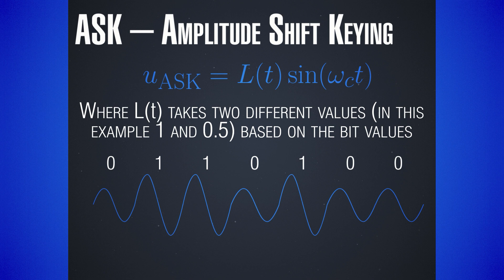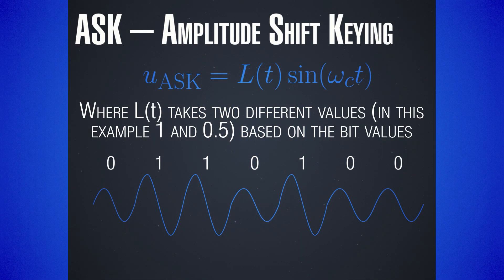For example, if we have a sequence 0010110, you can see that the amplitude, whenever we have zeros, is lower — twice as low as when we have ones. Of course, it doesn't have to be exactly twice as low; you can use different values. You could have the amplitude entirely disappearing when we have zeros, but this is not a very good idea because if you have a long sequence of zeros, you can lose the signal. But essentially this is the idea of shift keying — depending on the logical bit, we modify the sine wave to form a digitally modulated signal.